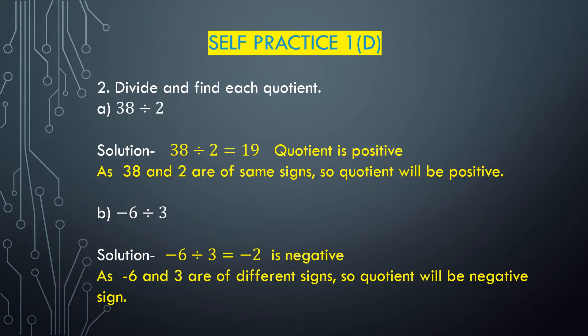Now we solve question number 2: divide and find each quotient. Part A: 38 divided by 2. Both 38 and 2 are positive integers, so when we divide them the quotient will be positive. We know 2 multiplied with 19 is 38, so 38 divided by 2 is 19. As both are of the same sign, the quotient 19 is positive.